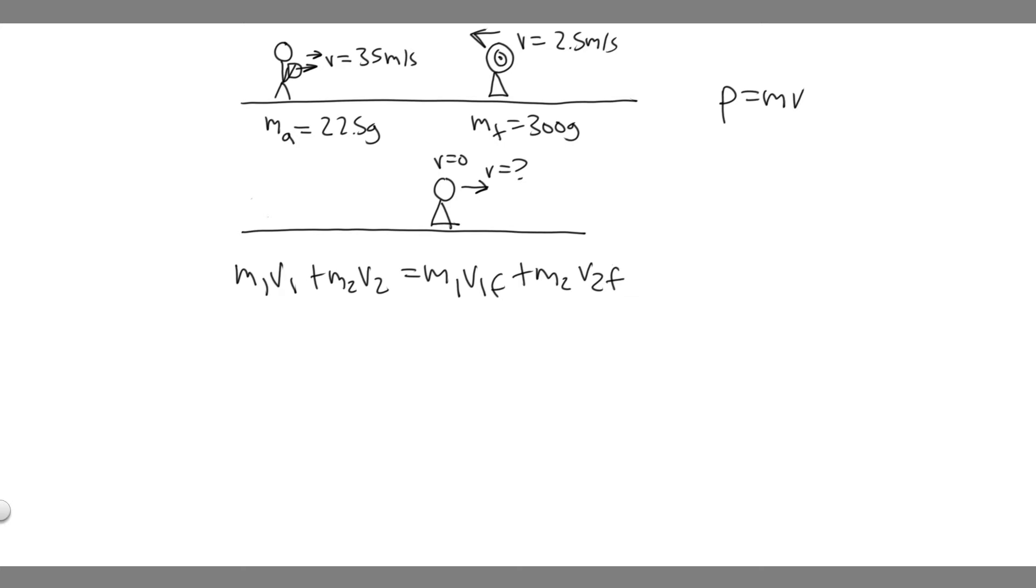When I say two I'm referring to the target and when I say one I'm referring to the arrow. So this is basically the momentum before, the momentum of the arrow before, the momentum of the target before. This is the momentum of the arrow after and this is the momentum of the target after.